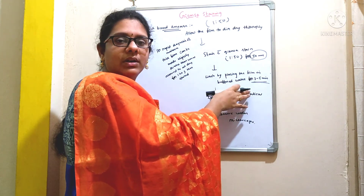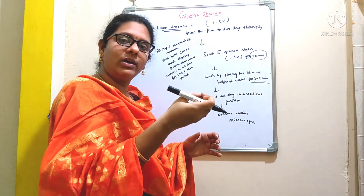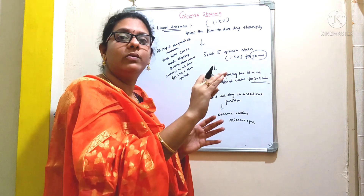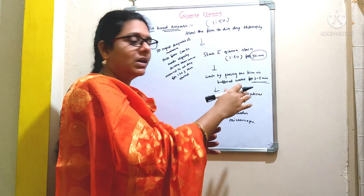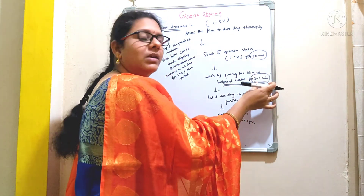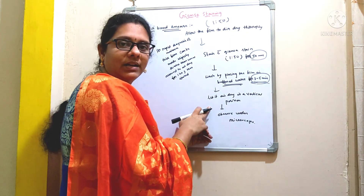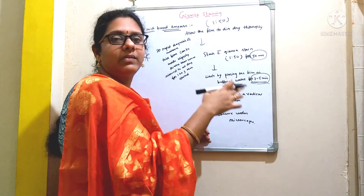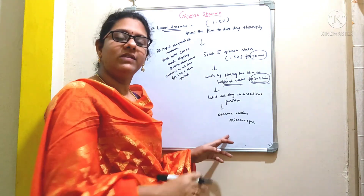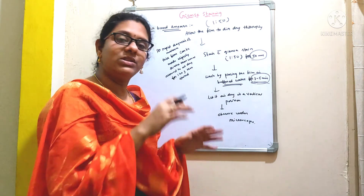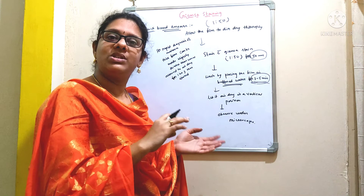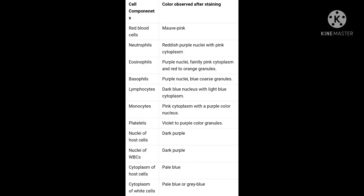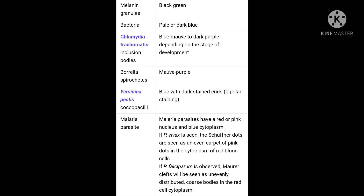After staining, wash the film using a buffered water solution — place the film in and out of a Coplin jar containing buffered water. Do not go with excessive washing, as that may decolorize the film; just wash for 3 to 5 minutes. After washing, air dry the film by keeping it in a vertical position. Then examine under the microscope — initially with 40x lens, followed by the oil immersion lens — to distinguish bacterial cells, cell components, and parasites based on their morphology and color.